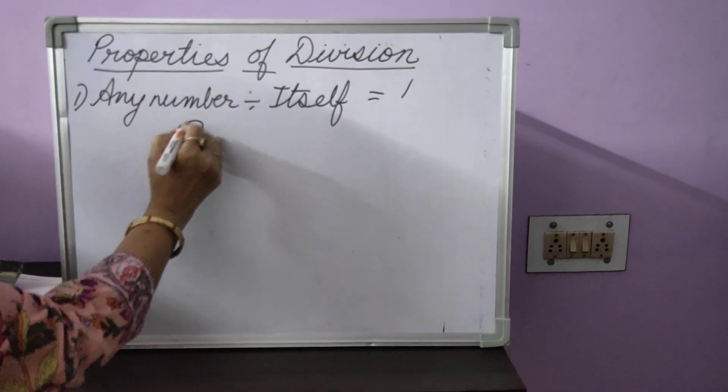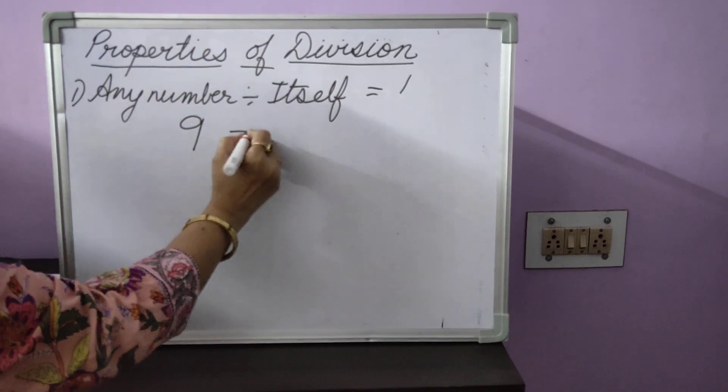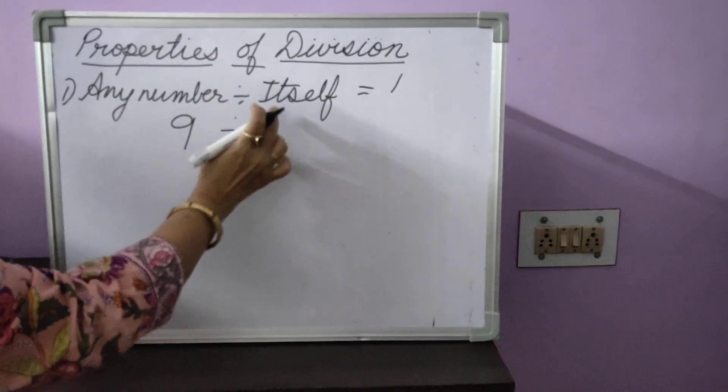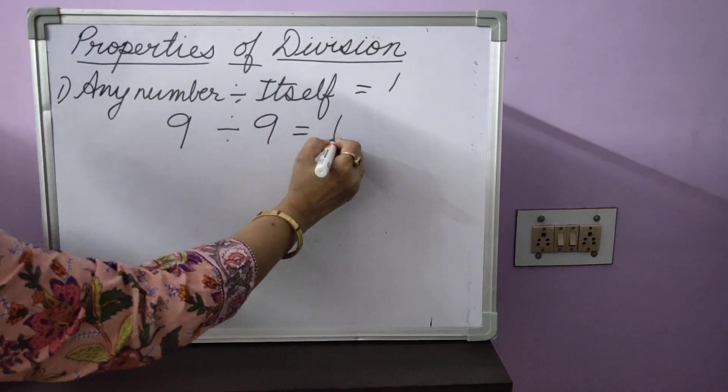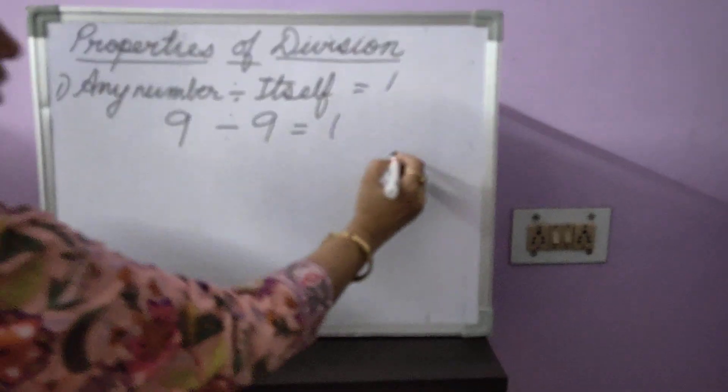The very first property of division is any number divided by itself is equal to 1. For example, if you take the number 9, any number you take, you divide it by itself, that is by the same number, your answer will be 1.